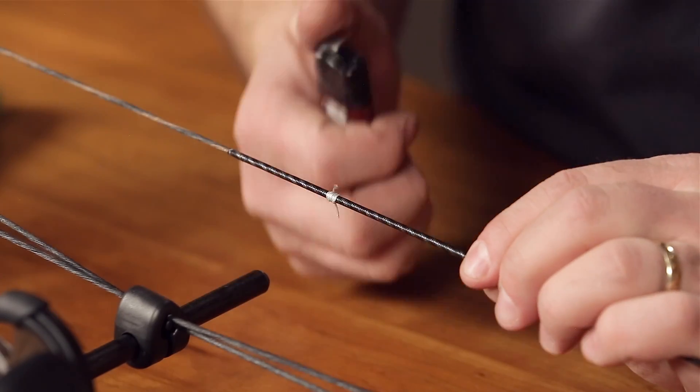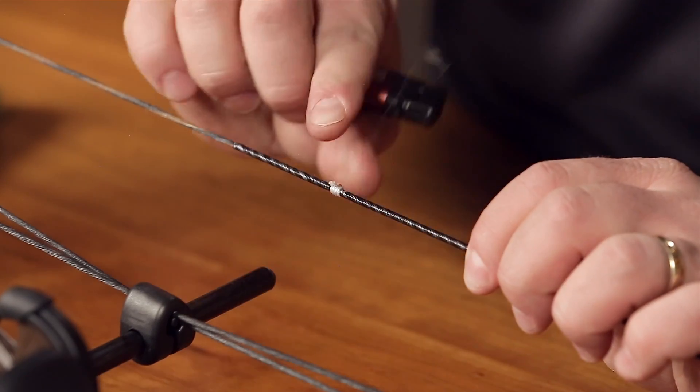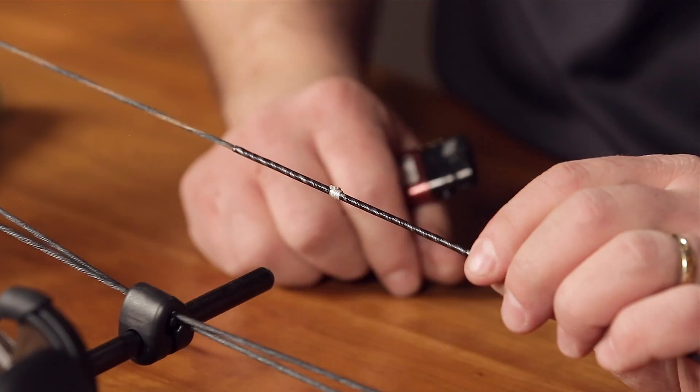With the two tails that you have left, you're going to singe them, which will create a little ball to help hold your knot in place. And that's how you hand tie a nock locator on your string.